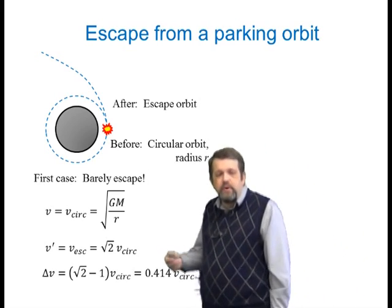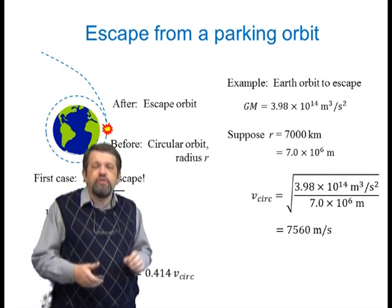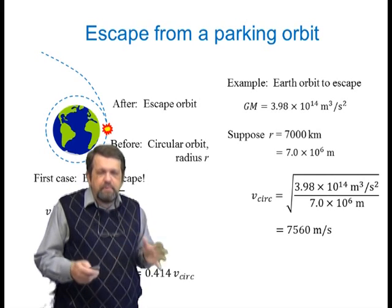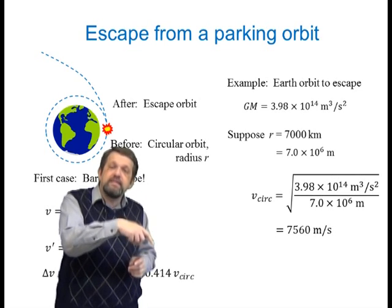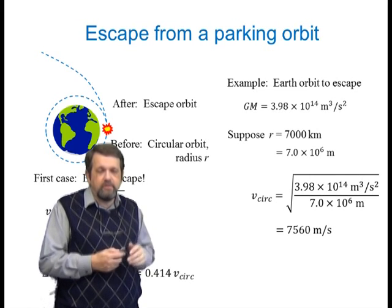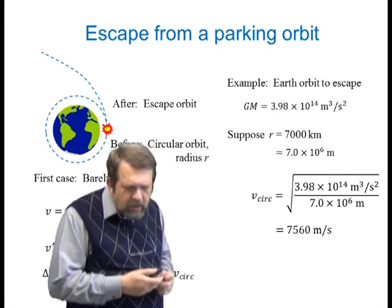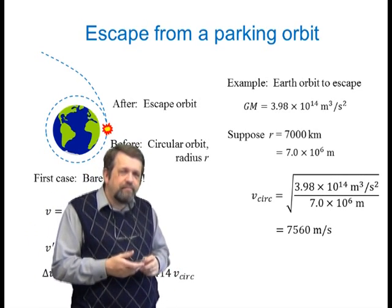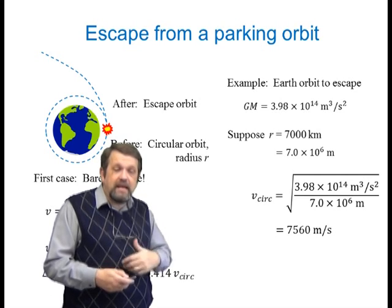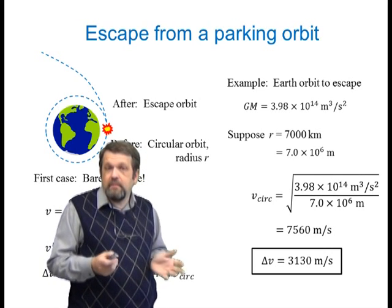Let's think about a real example: escaping from Earth orbit. GM for Earth is about 4×10¹⁴ m³/s². Starting from a circular parking orbit of radius 7,000 km (7×10⁶ m), the circular orbit speed is about 7,560 m/s. So the delta-V needed to go from that circular orbit into a parabolic escape orbit is 0.414 times that, which is about 3,130 m/s.